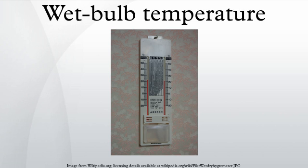The thermodynamic wet bulb temperature is a thermodynamic property of a mixture of air and water vapor. The value indicated by a simple wet bulb thermometer often provides an adequate approximation of the thermodynamic wet bulb temperature. For an accurate wet bulb thermometer, the wet bulb temperature and the adiabatic saturation temperature are approximately equal for air-water vapor mixtures at atmospheric temperature and pressure. This is not necessarily true at temperatures and pressures that deviate significantly from ordinary atmospheric conditions, or for other gas or vapor mixtures.